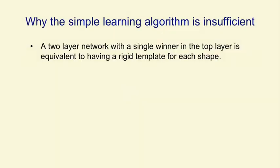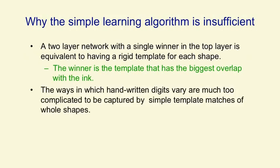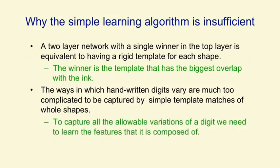One thing about this learning algorithm is because the network's so simple it's unable to learn a very good way of discriminating shapes. What it learns is equivalent to having a little template for each shape and then deciding the winner based on which shape has the template that overlaps most with the ink. The problem is that the ways in which handwritten digits vary are much too complicated to be captured by simple template matches of whole shapes. You have to model the allowable variations of a digit by first extracting features and then looking at the arrangements of those features.